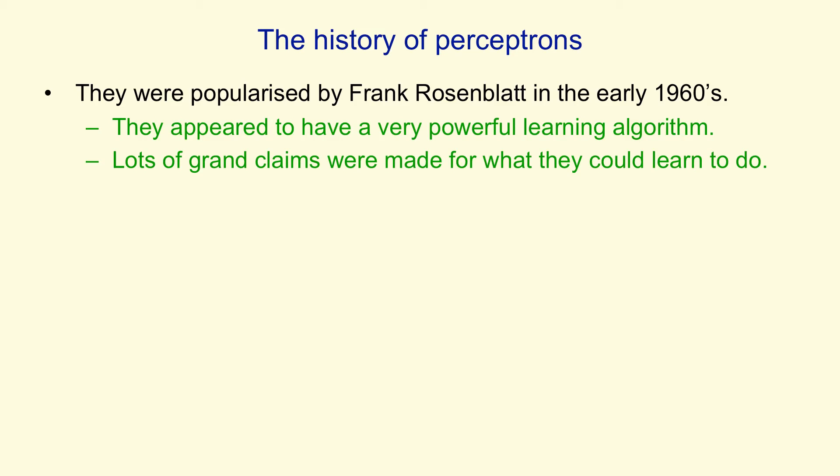For example, people claimed they could tell the difference between pictures of tanks and pictures of trucks, even if the tanks and trucks were partially obscured in a forest. Now, some of those claims turned out to be false. In the case of the tanks and the trucks, it turned out the pictures of the tanks were taken on a sunny day, and the pictures of the trucks were taken on a cloudy day. And all the perceptron was doing was measuring the total intensity of all the pixels. That's something that we humans are fairly insensitive to. We notice the things in the picture. But a perceptron can easily learn to add up the total intensity. That's the kind of thing that gives an algorithm a bad name.